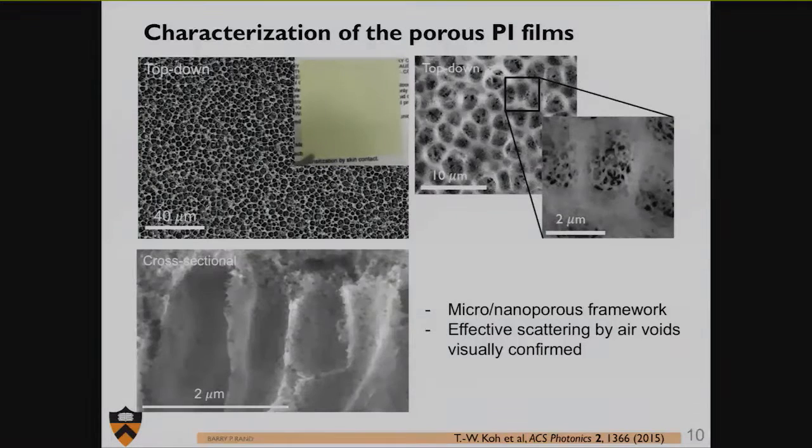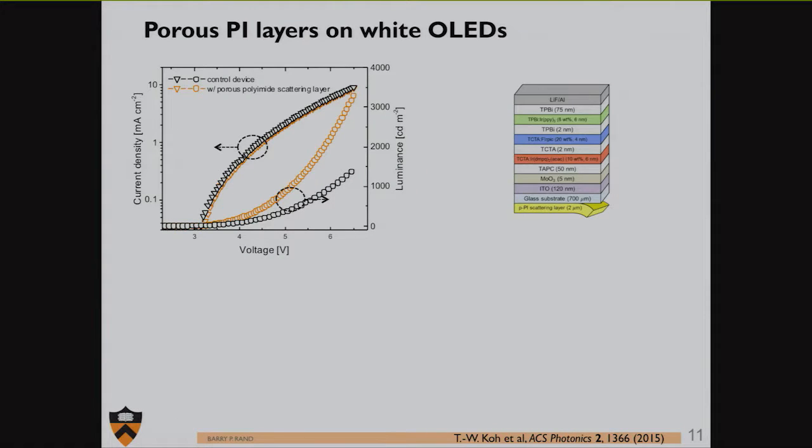Here's a picture of one. We have this very porous framework with a lot of interface between air and polyimide to scatter light. We see indeed this film is very hazy, very opaque. Light does not transmit through it directly, it always takes a scattered path. Now if we put this on the backside of a substrate, I should highlight we're still working with a glass substrate and putting selectively this porous polyimide layer on the backside. We can see that doing that does not change our current versus voltage curve at all.